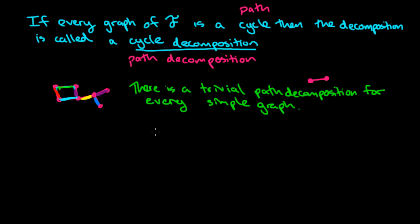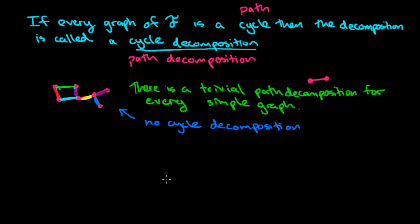But trivial path decompositions aren't so interesting. We're more interested in decomposing into cycles. And we just saw an example right here where we can easily tell that there is no cycle decomposition for that graph.